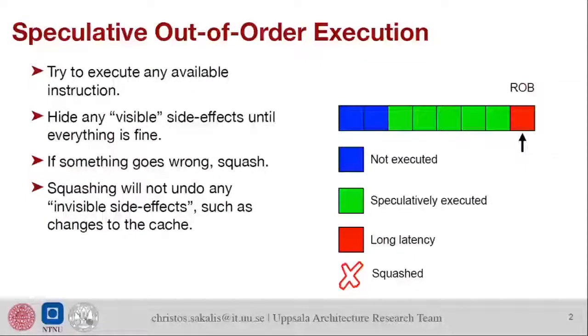I assume everyone knows about speculative execution, but very quickly what happens in high-performance cores is you try to execute all available instructions. Sometimes that means you have an instruction that might take a long time to execute, like this red instruction here, and then you just speculatively execute more instructions hoping that you're doing the correct thing. The idea is that if something goes wrong, then you delete or squash all the other instructions and restart from the beginning.